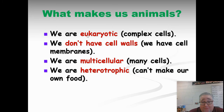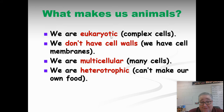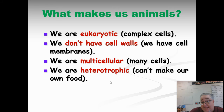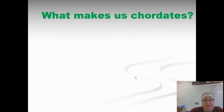The thing is, lots of organisms fit into this category. A jellyfish, for example, is eukaryotic, doesn't have cell walls, is multicellular, and is a heterotroph — so it automatically fits into the animal kingdom. You can see there's a lot of diversity when it comes to animals, because this is really all animals need to be considered animals.